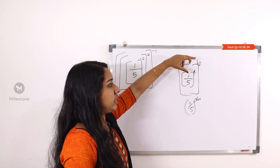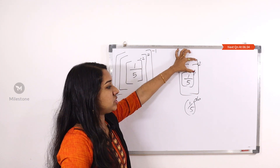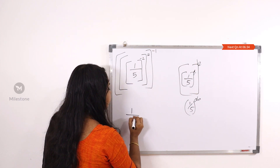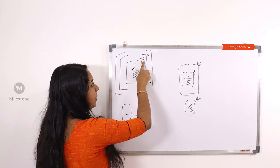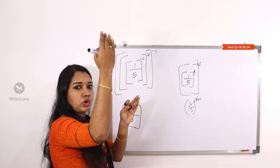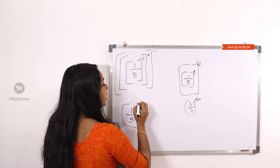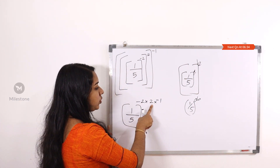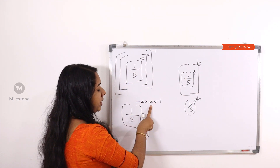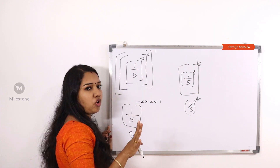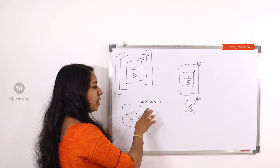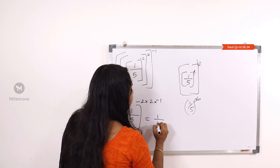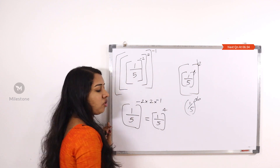Whole raise to a, whole raise to b, raised to 2ab. All raise to minus 2, 2 minus 1. If you raise to 8, you can use all of them. Minus 2 into 2 into minus 1. Minus 2 into 2 is minus 4. Minus 4 into minus 1 is 4. What minus is positive? Minus 4 into minus 1 is 4. Then 1 by 5, all raise to 4 is 4.